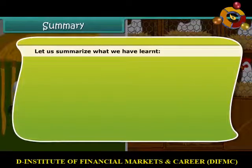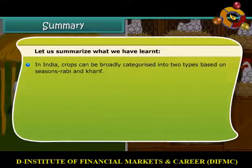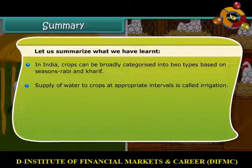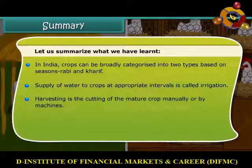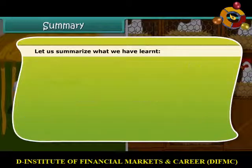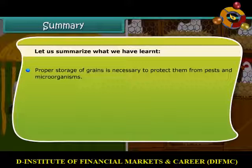Let us summarize what we have learned. In India, crops can be broadly categorized into two types based on the seasons they are grown in — Rabi and Kharif. Supply of water to crops at appropriate intervals is called irrigation. Harvesting is the cutting of the mature crop manually or by machines. Separation of the grains from the chaff is called threshing. Proper storage of grains is necessary to protect them from pests and microorganisms. Animal husbandry means rearing and breeding livestock on a large scale.